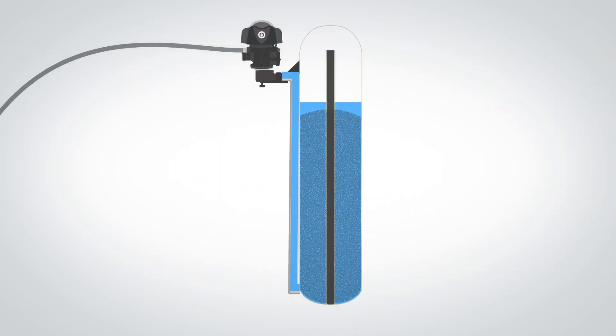After the air has been replenished, the final step of the regeneration cycle is a rapid rinse, which packs the media back down and rinses the filter one final time at a higher flow rate before returning to service.